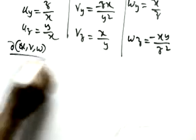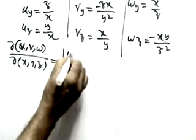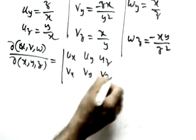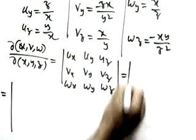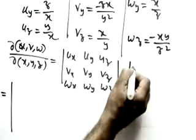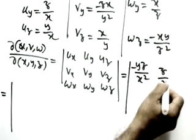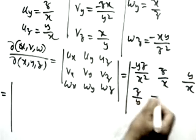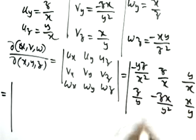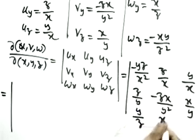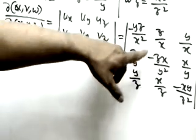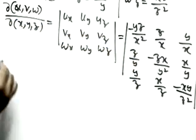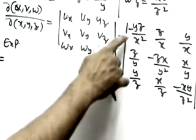The Jacobian determinant for ∂(u,v,w)/∂(x,y,z) is a 3×3 matrix with rows [u_x, u_y, u_z], [v_x, v_y, v_z], [w_x, w_y, w_z]. Substituting: Row 1: [-y/x², 1/z, -y/z²... ], actually substituting all computed partials. We expand directly, noting cancellations will simplify things.